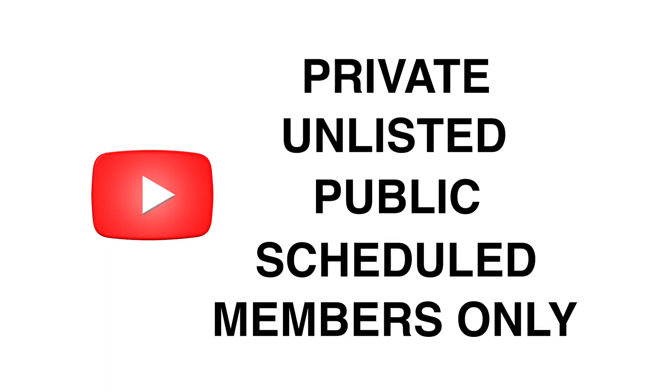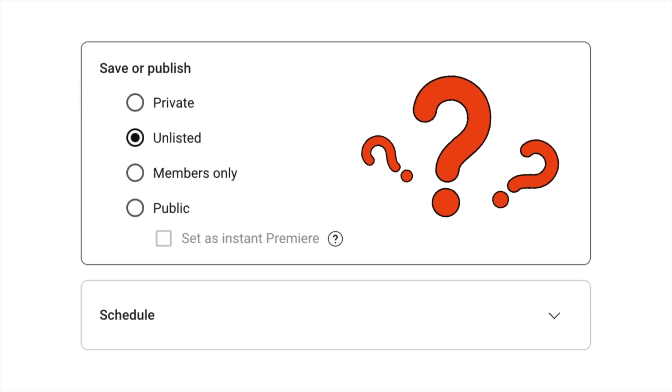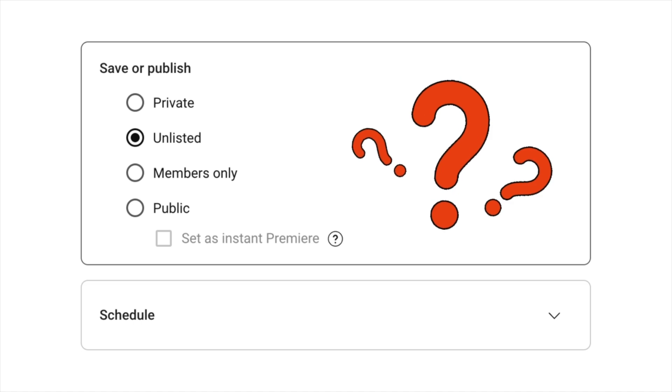One of the things you need to think about when you upload your YouTube video is the visibility — meaning do you make it private, unlisted, public, scheduled, or members only? There are a lot of choices, so in this video I'll walk through each one of those settings, give you a bit more information about what they do, and share what I do and why.